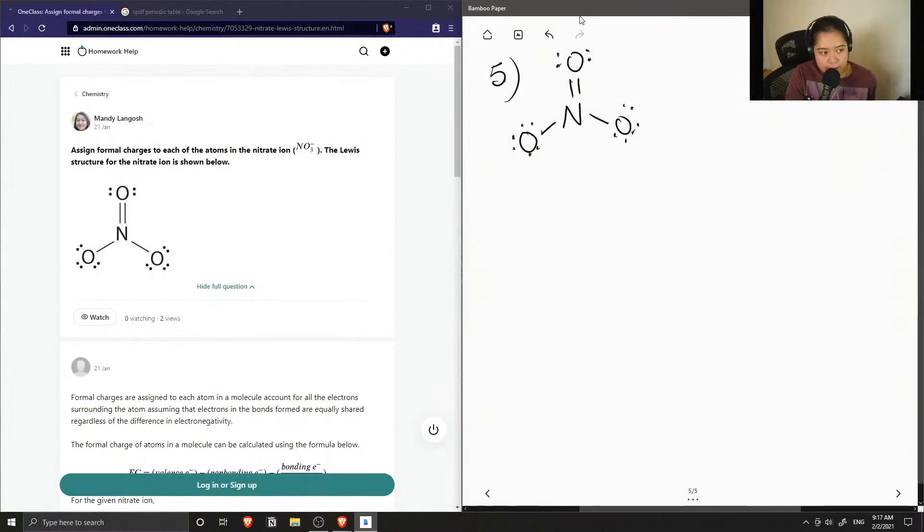I'll write down the equation for formal charge. Formal charge is equal to the number of valence electrons minus the number of non-bonding electrons minus the number of bonding electrons divided by two.